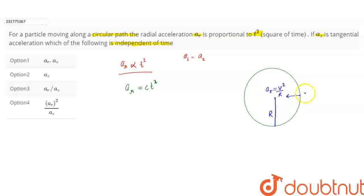Where r is the radius of the circle in which it is moving and v is its velocity. So I can replace AR with v square by r and it is equal to c into t square.